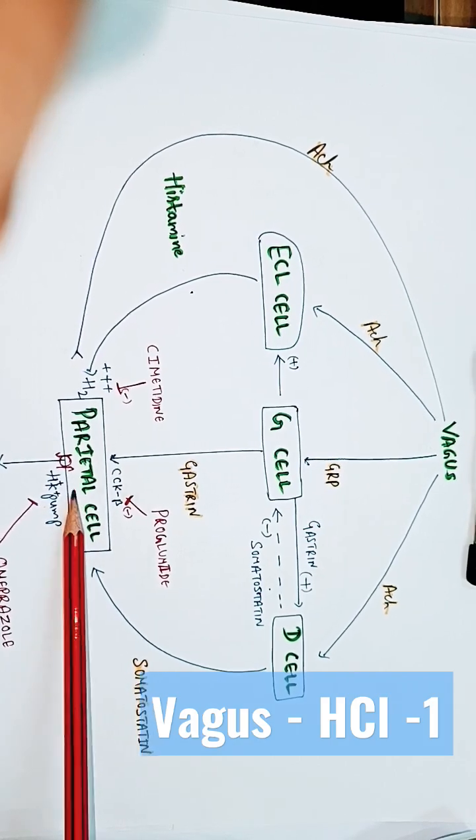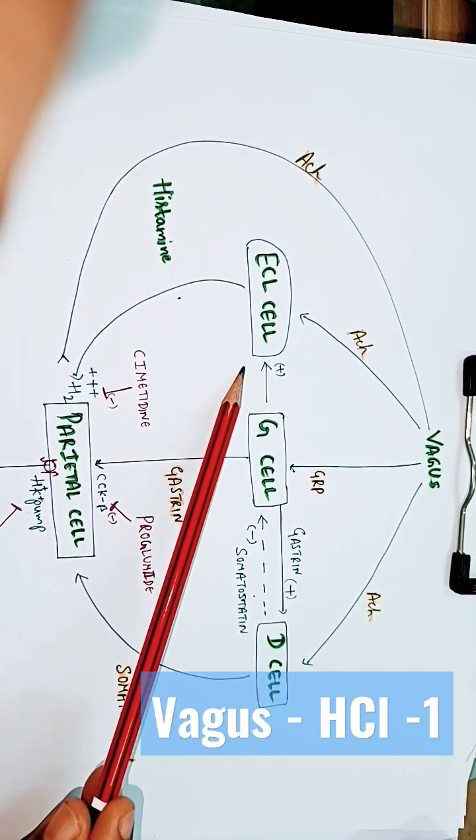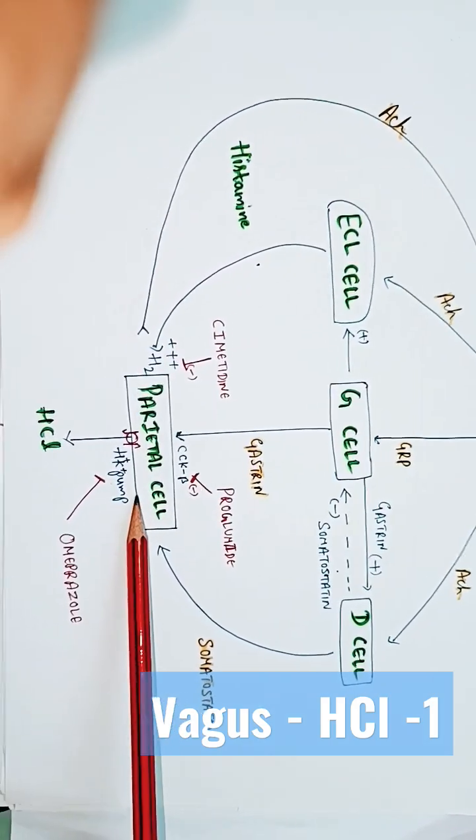Gastrin not only acts directly on parietal cell but also stimulates enterochromaffin-like cell to release histamine and acts on parietal cell.